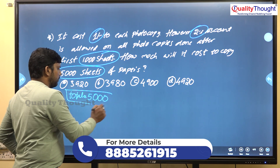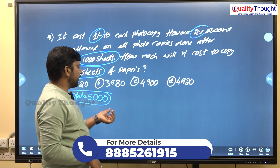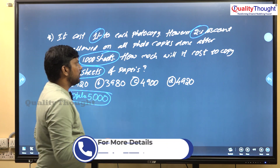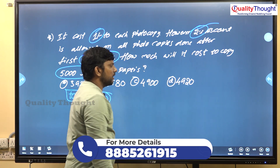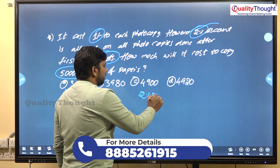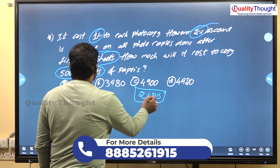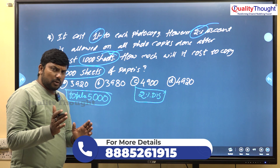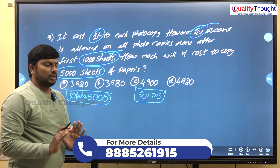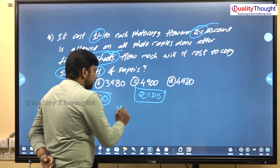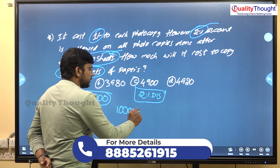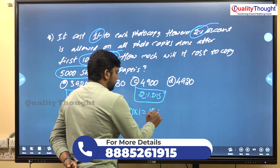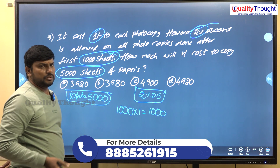5000 sheets of paper are required. At regular cost of 1 rupee each, we would pay 5000 rupees. But a 2% discount is allowed after the first 1000 sheets. Up to 1000 sheets there is no discount, so 1000 copies at 1 rupee equals 1000 rupees.